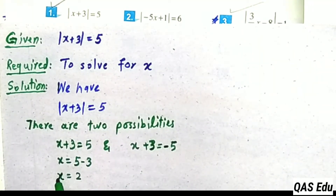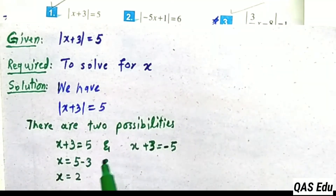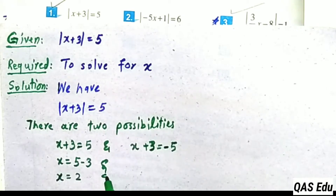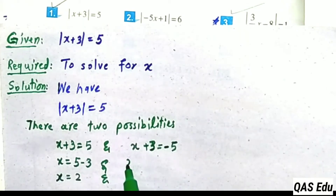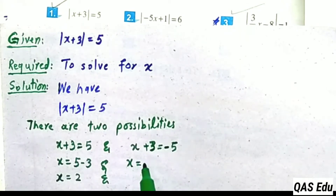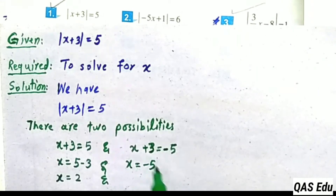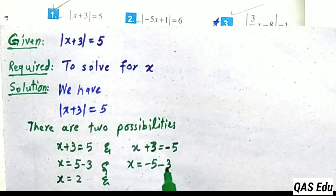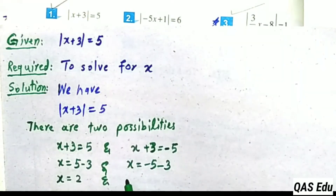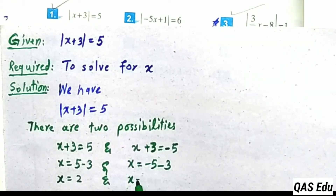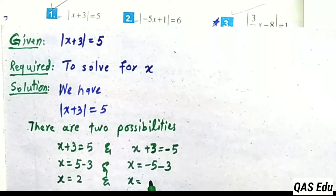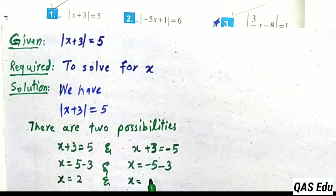Then x plus 2 is equal to 2. And for the other side, x plus 3 equals minus 5, so minus 5 minus 3 gives us the second value.